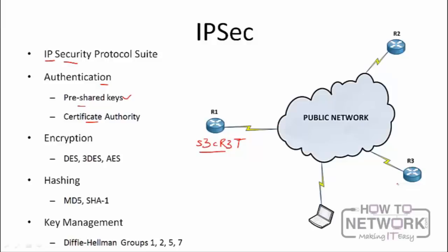The other authentication method is a certificate authority (CA). Router 1 and Router 3 both connect to a CA, which is a trusted issuer of certificates. These certificates are used to authenticate between the two VPN endpoints. Certificate authorities are also used for web servers — when you access an HTTPS website, the browser verifies the server's certificate. If the web server is not using a trusted CA, your browser will warn you that the certificate is not trusted.